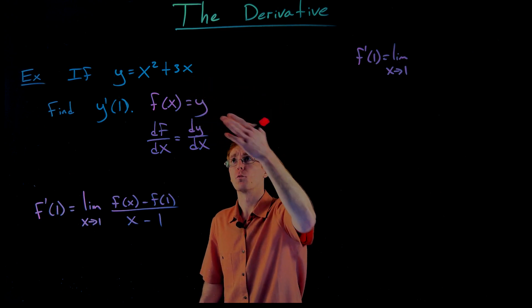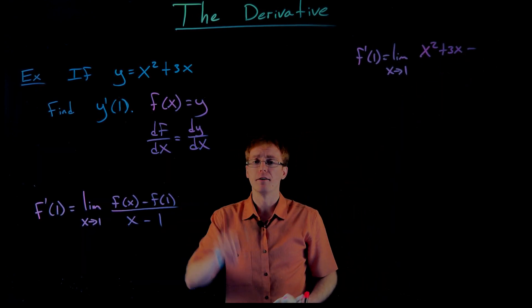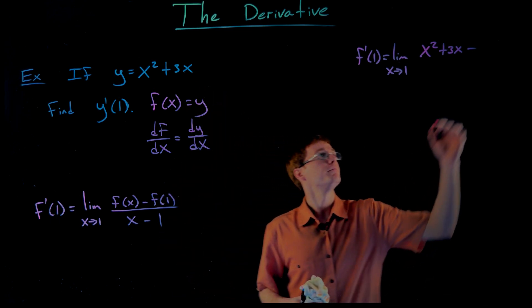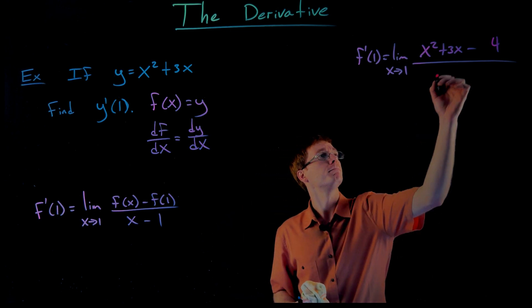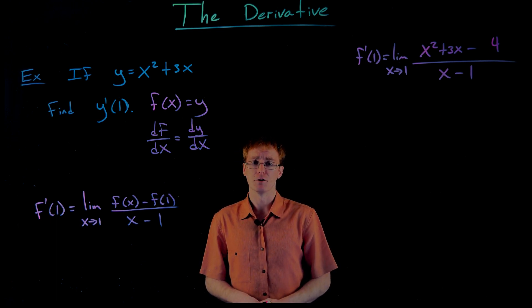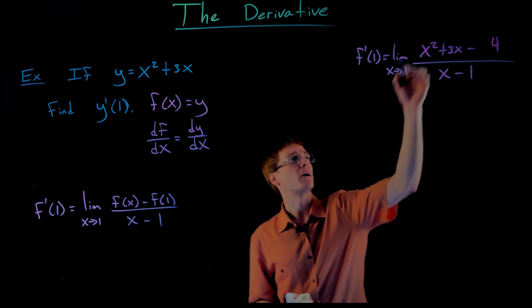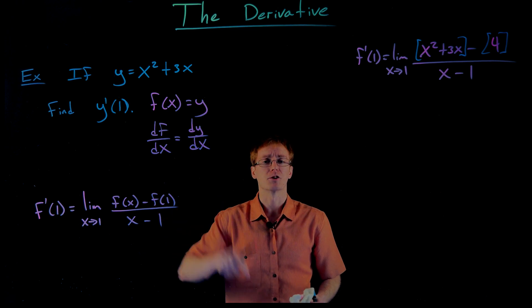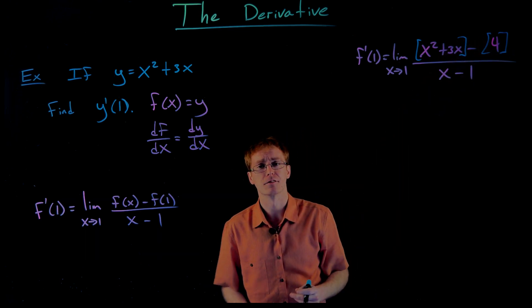What is f of x? That's just our function y: x squared plus 3x. Then we subtract f of 1 — the value of our function when the input is 1. When we plug x equals 1 in, we get 4 as our output. Then we divide by the change in x, which is x minus 1. For more complicated functions, it's a good idea to put f of x and f of 1 each inside their own set of brackets, so you're aware of which piece comes from which. When we have more terms in f of 1, we must distribute the negative sign to each term.